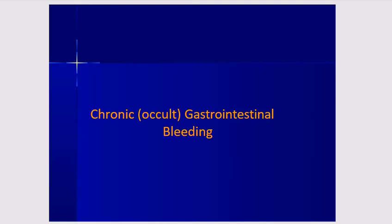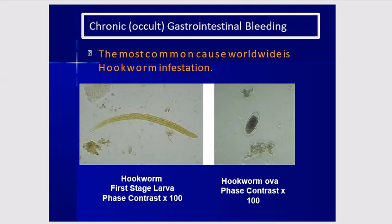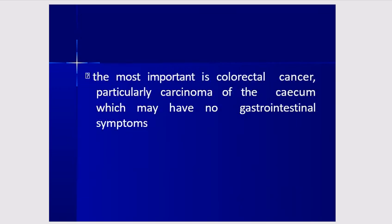Chronic or occult GI bleeding involves slow bleeding into the GI tract of up to 200 ml per day. It may signify a serious gastrointestinal lesion and usually presents as chronic iron deficiency anemia. The most common cause worldwide is hookworm infestation. Another common cause is colorectal carcinoma, especially of the cecum, which may present without GI symptoms and therefore present late with anemia, dyspepsia, and blood loss.